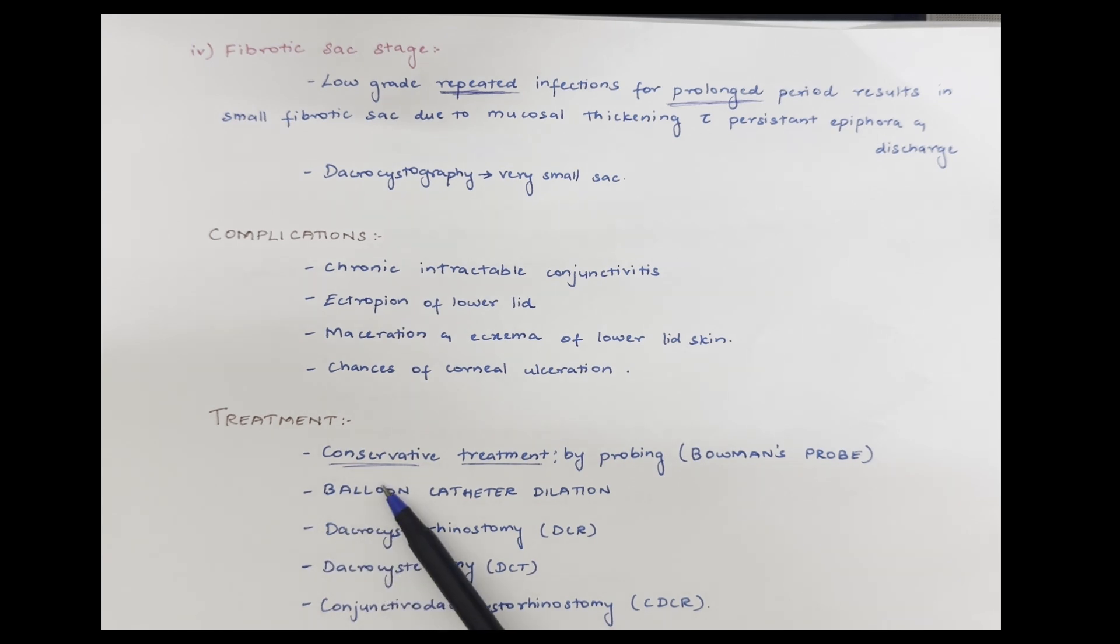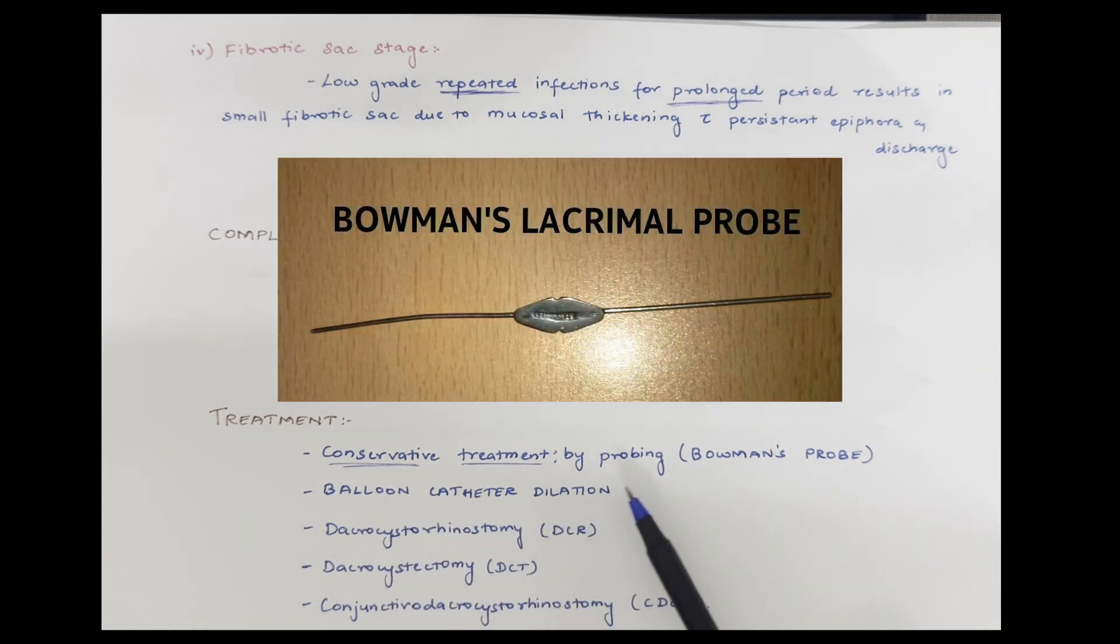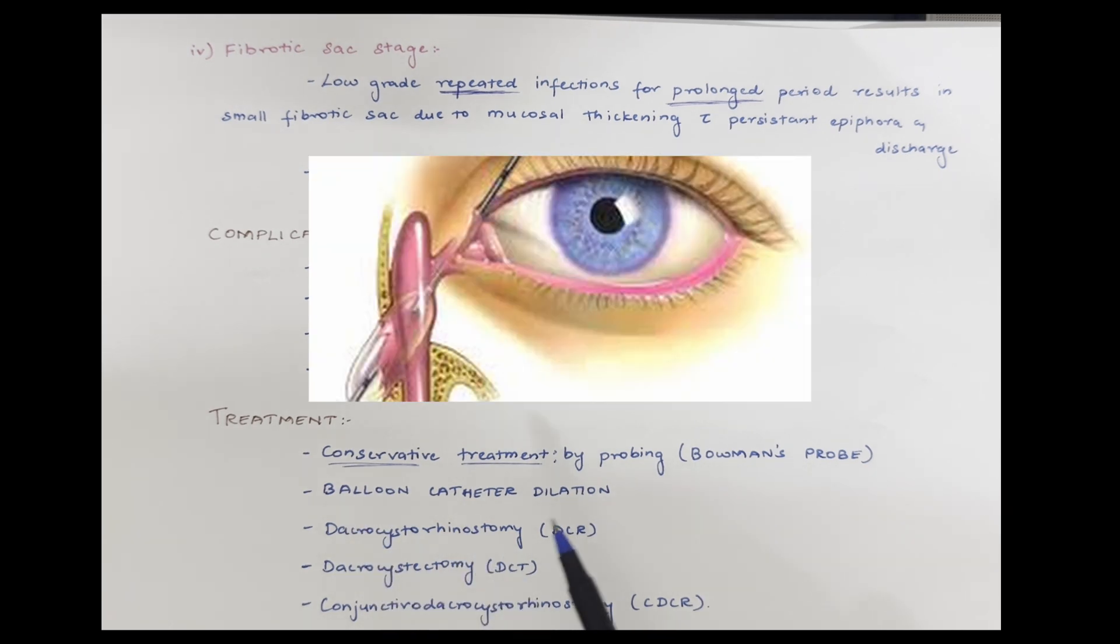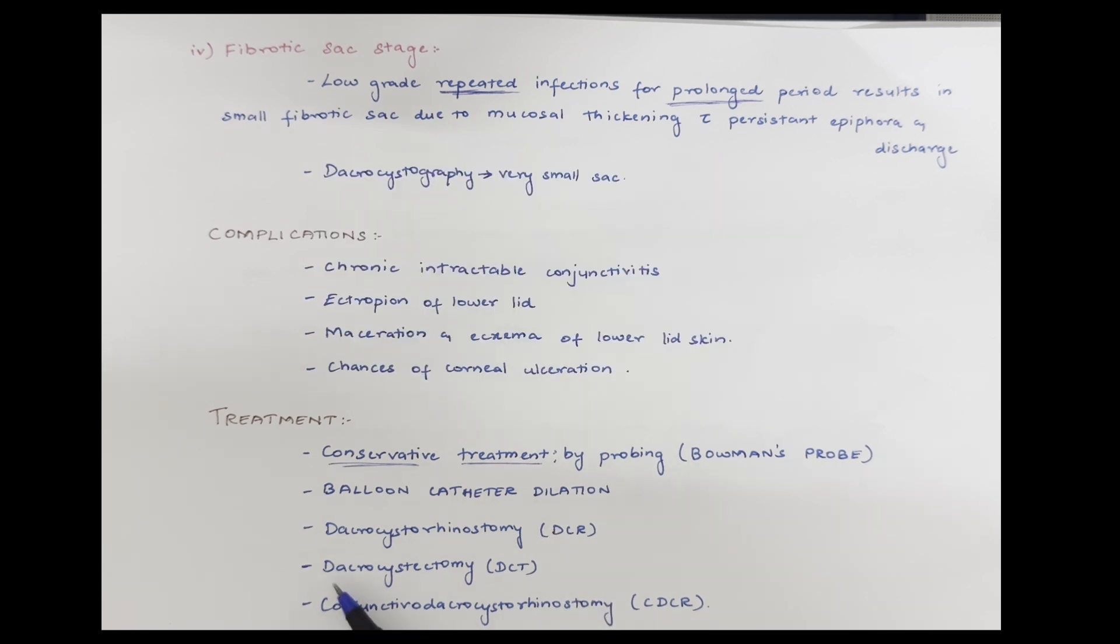In treatment, there is conservative treatment by probing with Bowman's probe. We can also do balloon catheter dilation. And then there are surgical treatments like dacryocystorhinostomy (DCR), dacryocystectomy (DCT), and conjunctivodacryorhinostomy (CDCR).